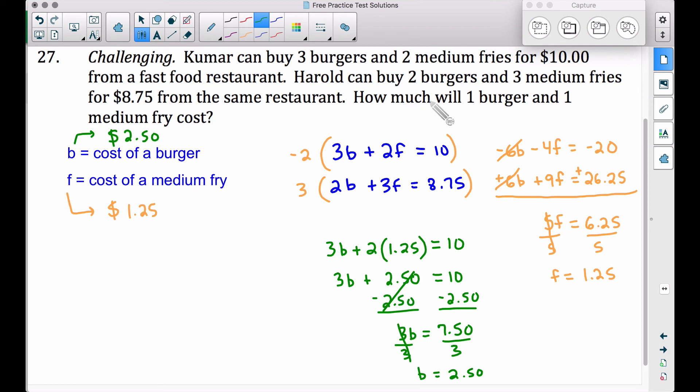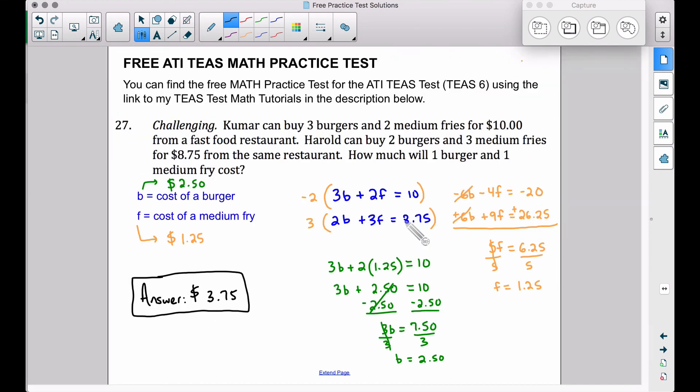Now to answer our question, how much will one burger and one medium fry cost? We add these two numbers together since that's the cost of one burger and that's the cost of one fry. And our answer is going to be $3.75. $2.50 for one burger, $1.25 for one fry, adding those together, that's how I'm getting to $3.75.